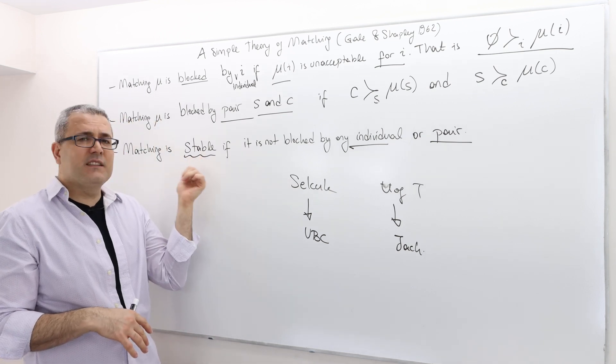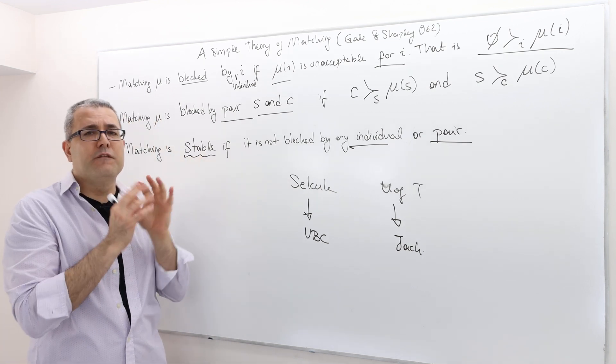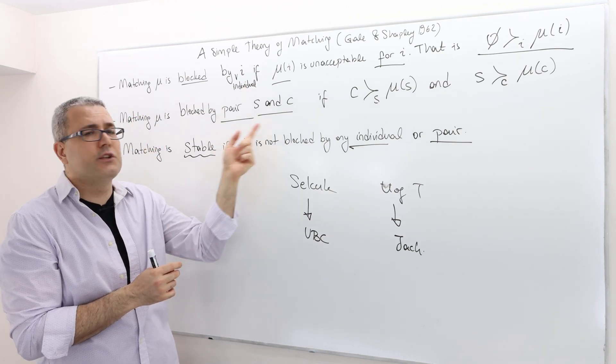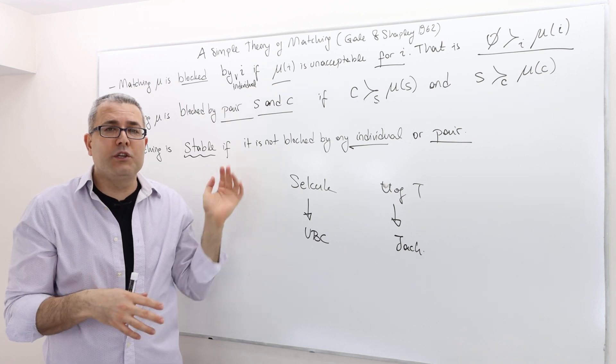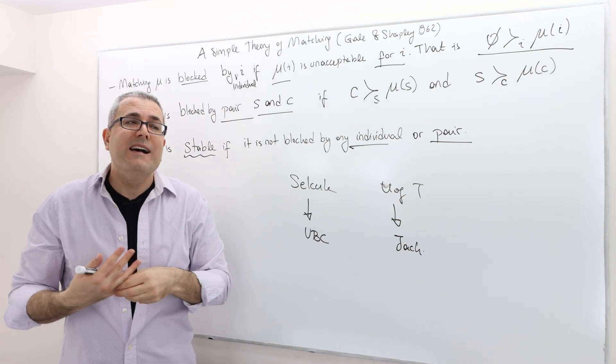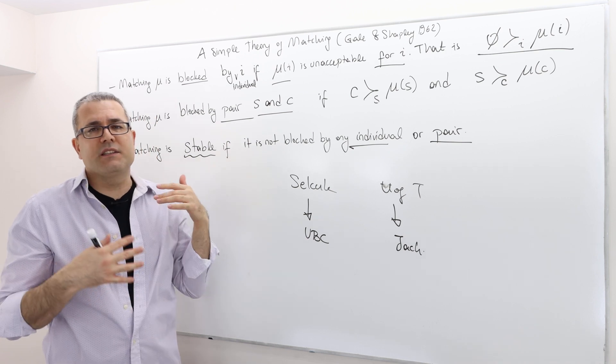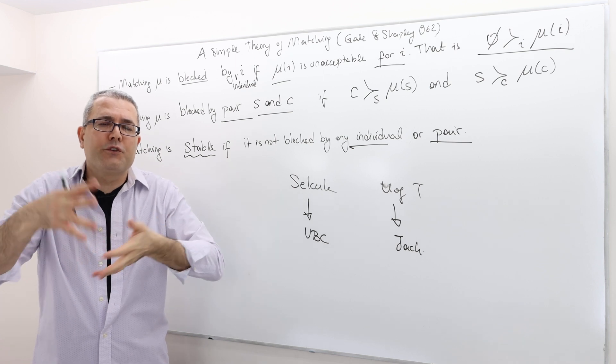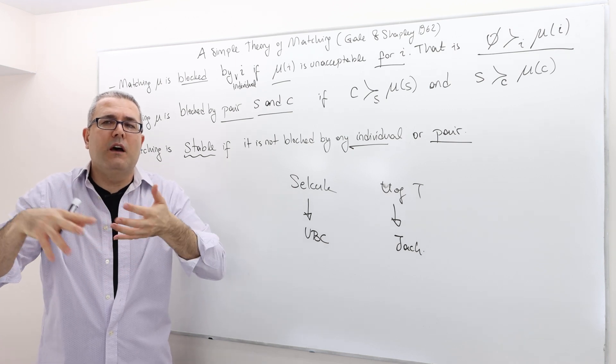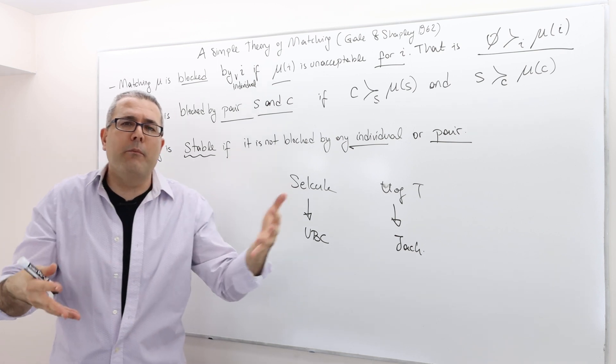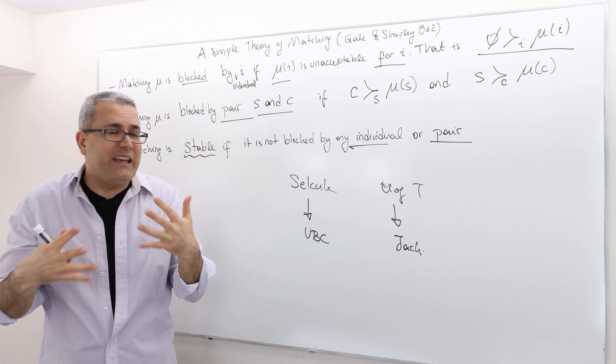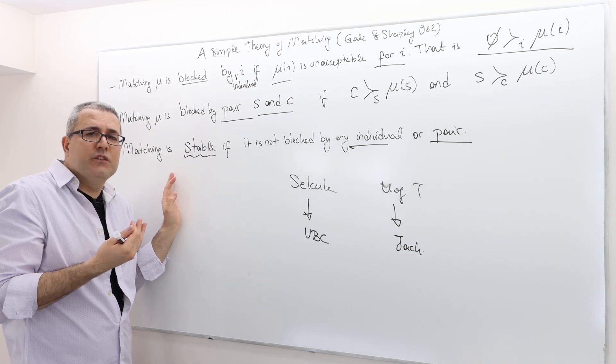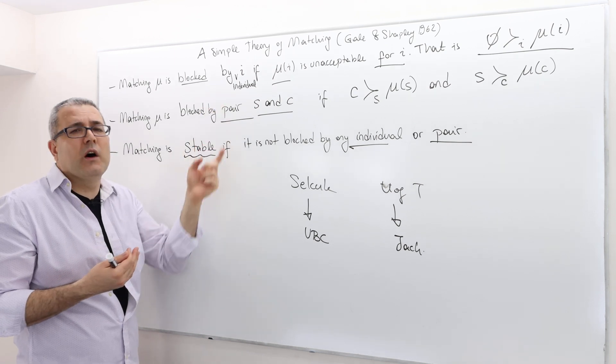Here, the concept of stability focuses only on coalitions of one individual and coalitions of two individuals. What about coalitions of three or four? The stability here doesn't say anything about it. Maybe a coalition of four prefers to sort of break the matching and then form their own matches.